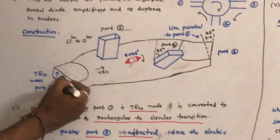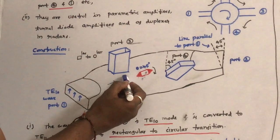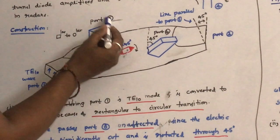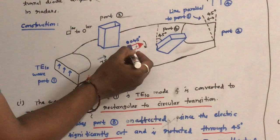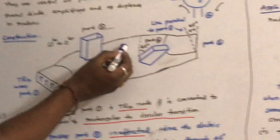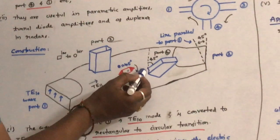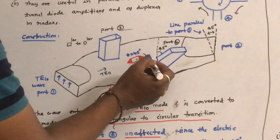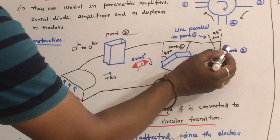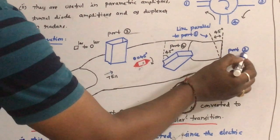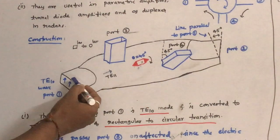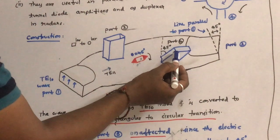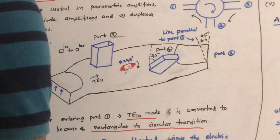When the signal is given to port 1, it is converted into TE₁₁ mode. This TE₁₁ mode passes port 3 unaffected because the electric field is not significantly cut by port 3. It undergoes a Faraday rotation of 45 degrees because of the ferrite rod, and also passes port 4 unaffected. It comes out of port 2 because port 2 is suitably aligned to receive this signal. Therefore, the input given to port 1 comes out of port 2, but not out of port 3 or port 4.